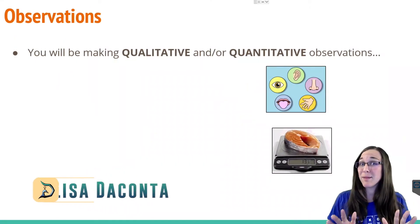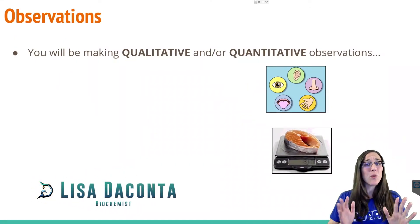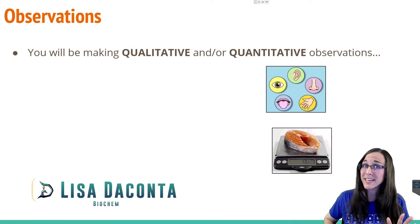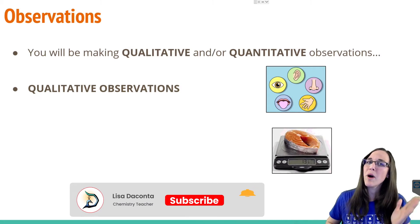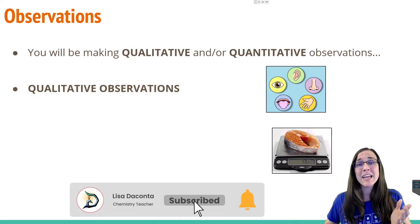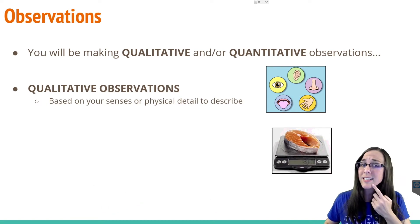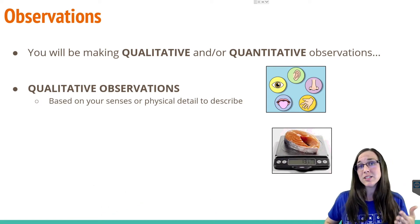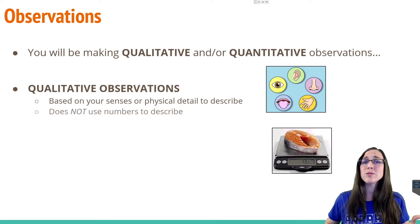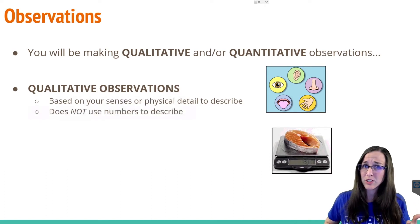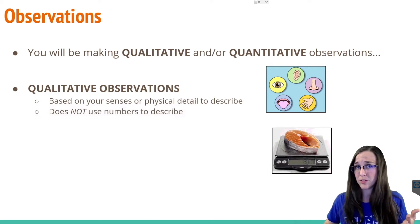In pretty much any lab setting you'll ever be in, you're going to be making qualitative and/or quantitative observations. What's the difference between the two? I like to think of qualitative like quality — can you hear it, see it, smell it, taste it? Those are all physical details to describe what you're looking at. Those would be qualitative observations, i.e. anything that doesn't have numerical values associated with them.